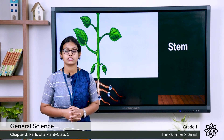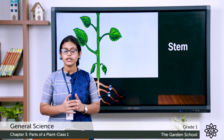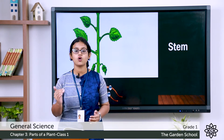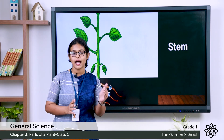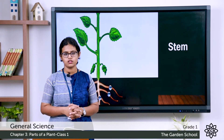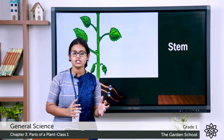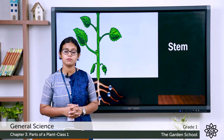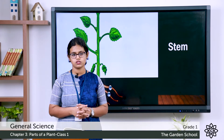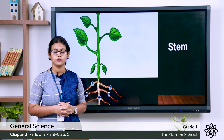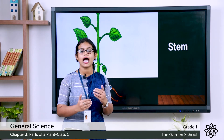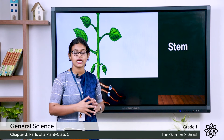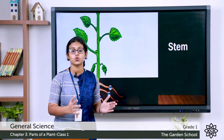The next part is the stem. The stem is above the soil. A plant can have a hard stem or a soft stem. For example, the stem of a mango tree is hard, while a rose plant has a soft stem. The function of the stem is to carry water and food throughout the plant. The root sucks the water and nutrients from the soil, and the stem carries them throughout the plant.